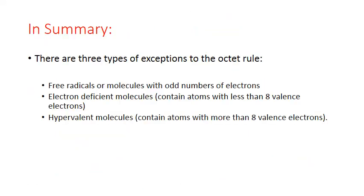In summary, there are three types of exceptions to the octet rule. Molecules that are free radicals have an odd number of electrons. Electron-deficient molecules contain atoms with less than eight valence electrons — including molecules with hydrogen, beryllium, or boron. And hypervalent molecules contain atoms with more than eight valence electrons, which must be elements from the third period of the periodic table or higher.